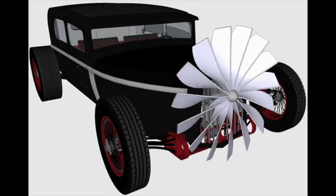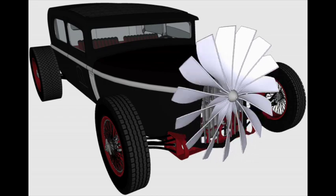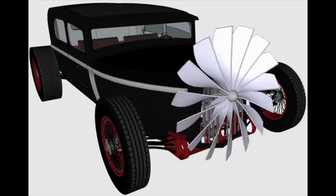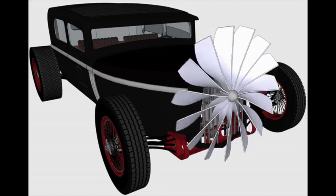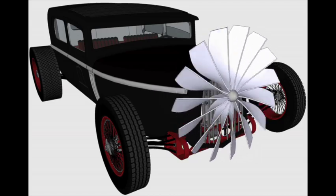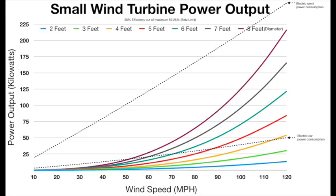A perpetual motion car experiment would be close to the same concept. The charged battery on board this electric vehicle would get the car up to cruising speed. This 5-foot turbine on this car can generate over 75 kilowatts of power at 120 miles per hour.